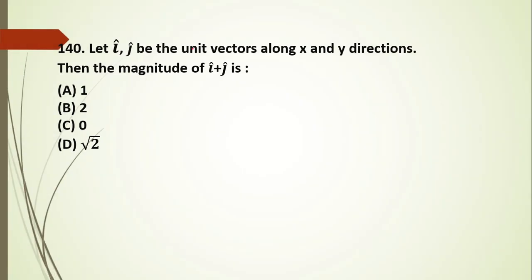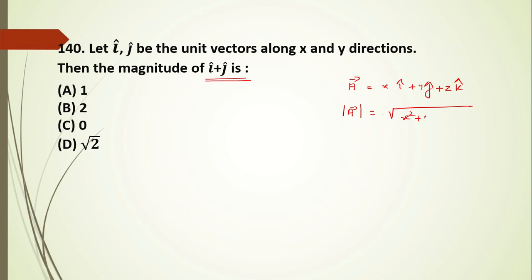Question 140: let I and J be unit vectors along X and Y directions. The magnitude of vector A = I + J: we use the formula for magnitude as square root of (x² + y² + z²). For I + J, the coefficients are both 1, so the magnitude equals the square root of 1² + 1² = √2. The answer is D.